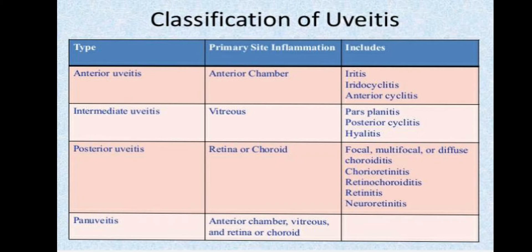Let's see the classifications or types of uveitis. The first is anterior uveitis, also known as iritis, iridocyclitis, and anterior cyclitis. Anterior uveitis occurs when the uvea is inflamed near the front of the eye — in the iris region.